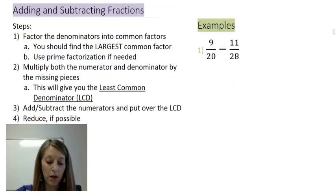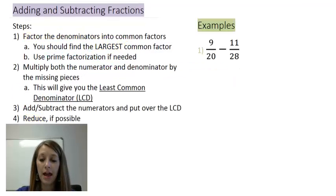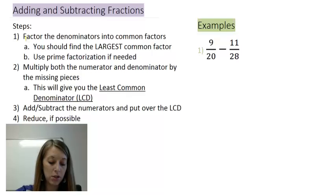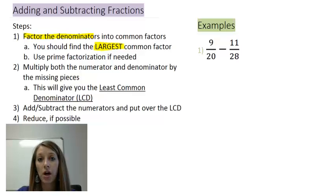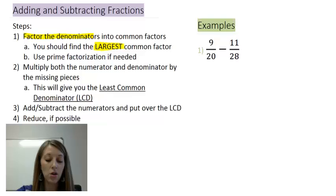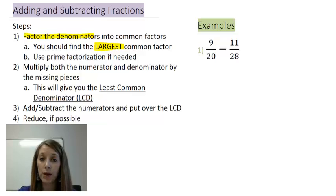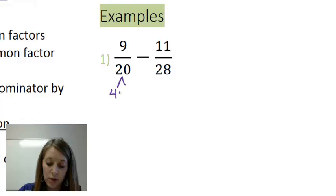The first example is 9 over 20 minus 11 over 28. The first thing we want to do is factor the denominator and pick out the largest common factor between the two denominators. You might notice that they're both even, so they both have a common factor of 2. But that's not the largest common factor. The largest common factor that goes into both 20 and 28 is actually 4. So I'm going to write 20 as 4 times 5, and 28 as 4 times 7.